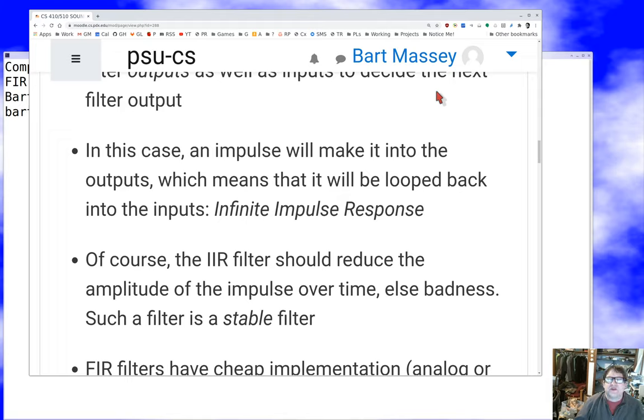The output of the filter is going to be looped back into the inputs. Why? Because it turns out this makes a really cheap filter. You can use much smaller convolutions to produce a filter of comparable quality. One of the weird consequences is that an impulse put into a system like this never really goes away.